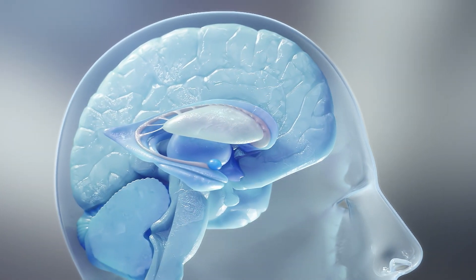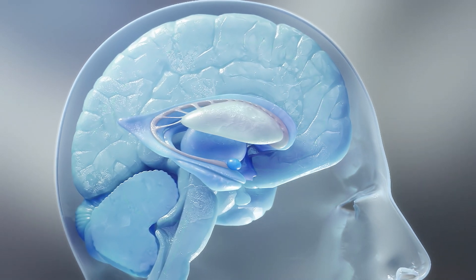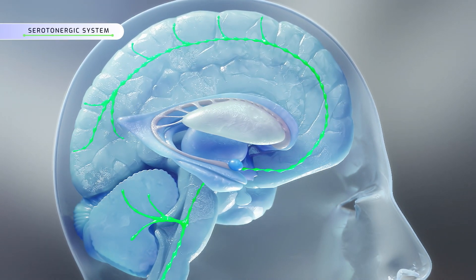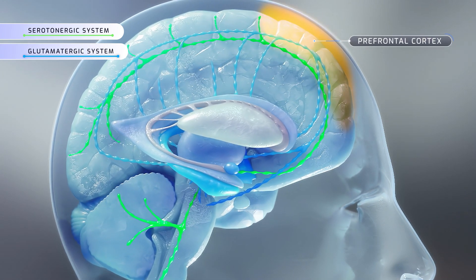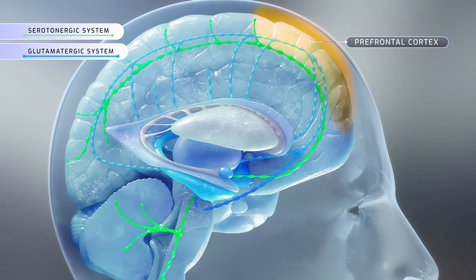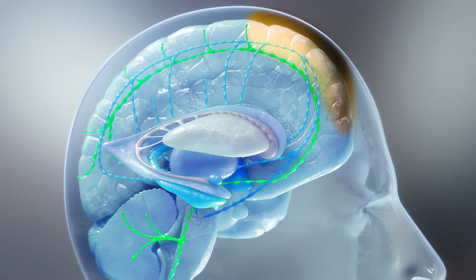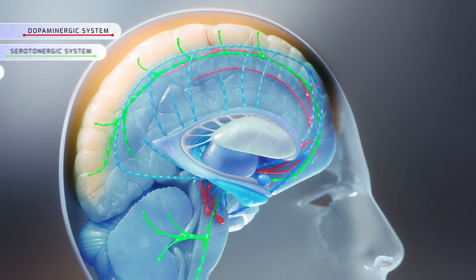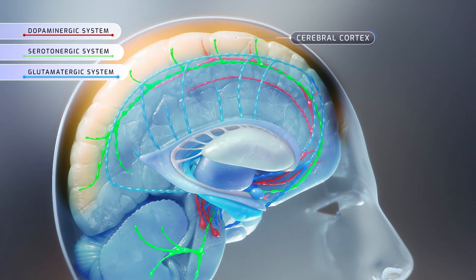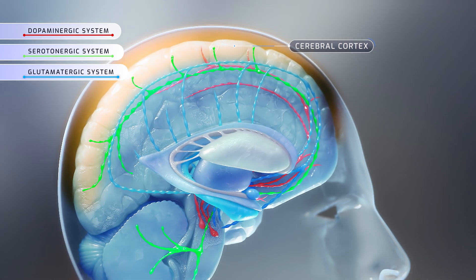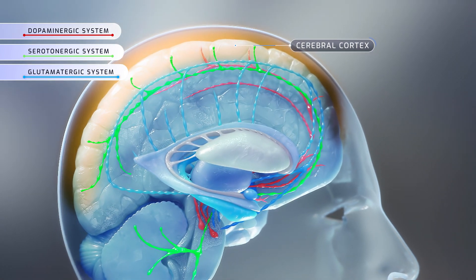More recent findings implicate other neuronal networks in the pathophysiology of schizophrenia, such as the serotonergic and glutamatergic circuits. In particular, NMDA glutamate receptor hypoactivity at GABAergic interneurons in the prefrontal cortex and serotonin hyperactivity at 5-HT2A receptors on glutamate neurons in the cerebral cortex could be responsible for downstream dopaminergic system alterations leading to positive symptoms.